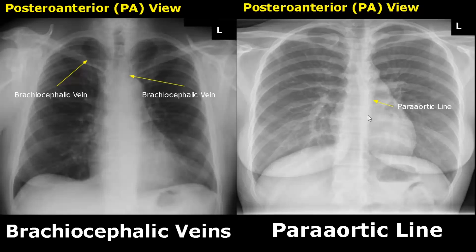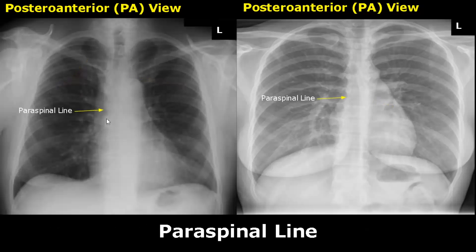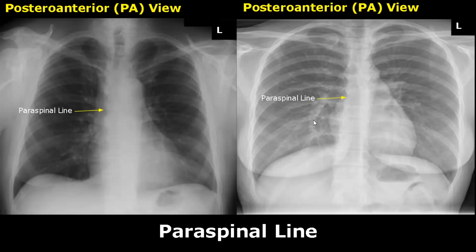The paraaortic line is formed by the wall of the thoracic aorta and the descending aorta. The paraspinal line is seen on the right side of the patient, and we can see this border of the thoracic spine.